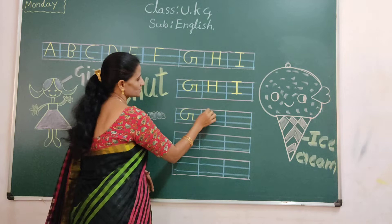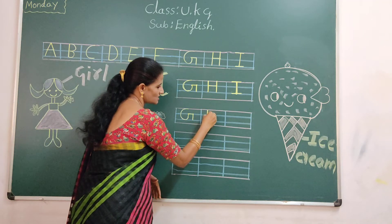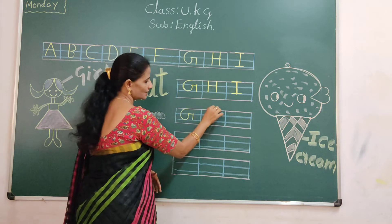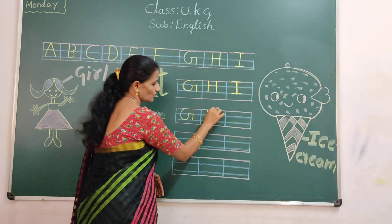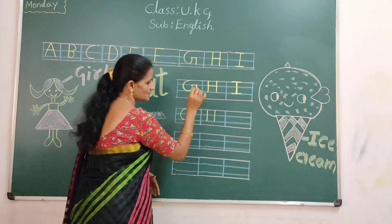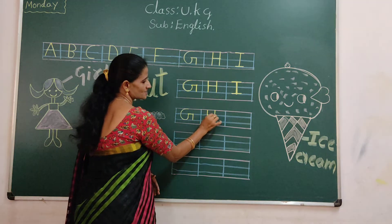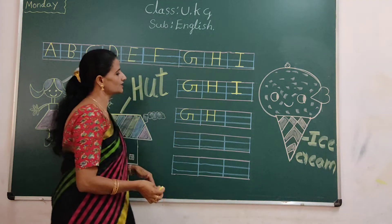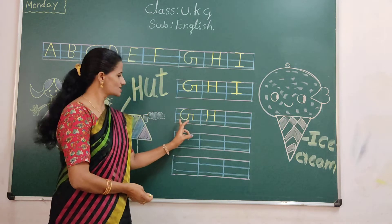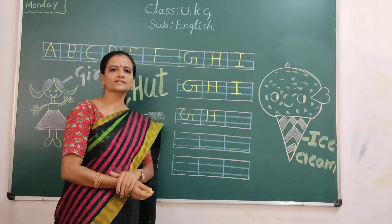Next letter H. You should touch three lines — one standing line, one more standing line. You should touch three lines. Center line — one sleeping line. What is this letter? H.